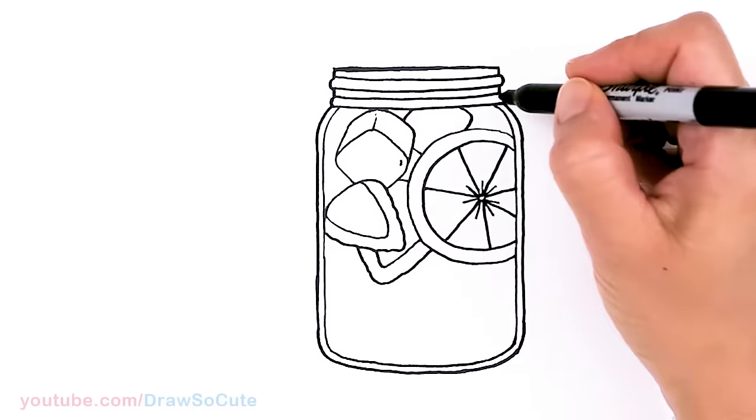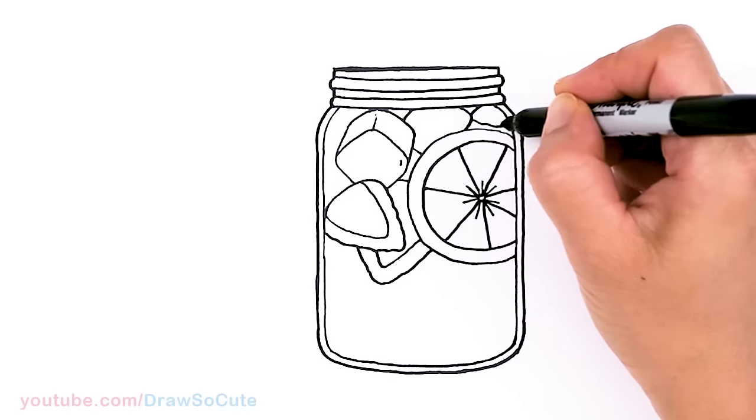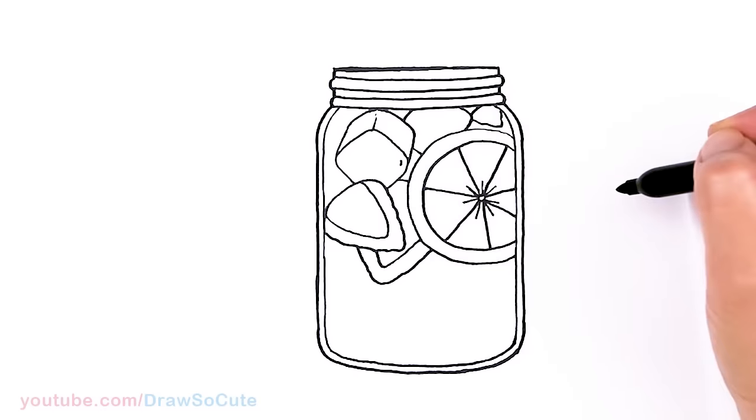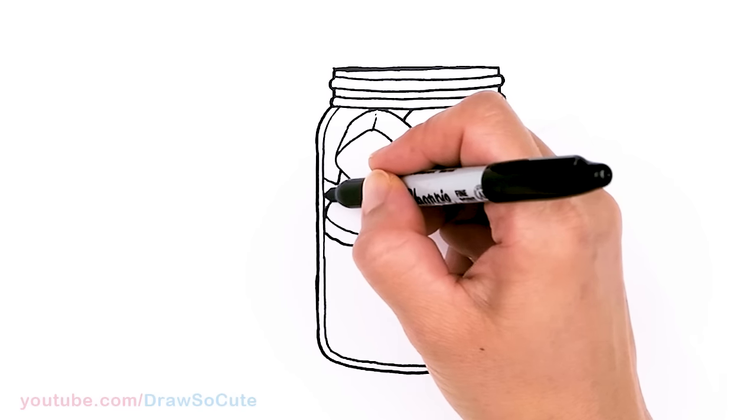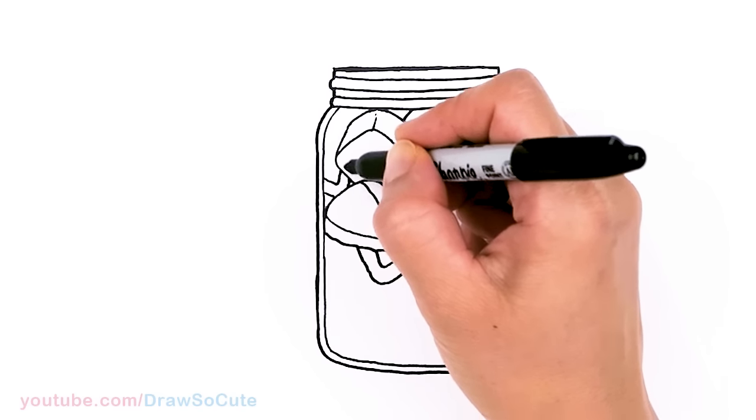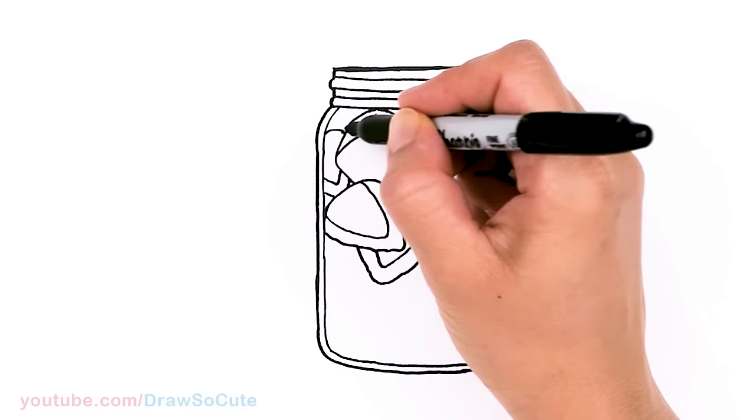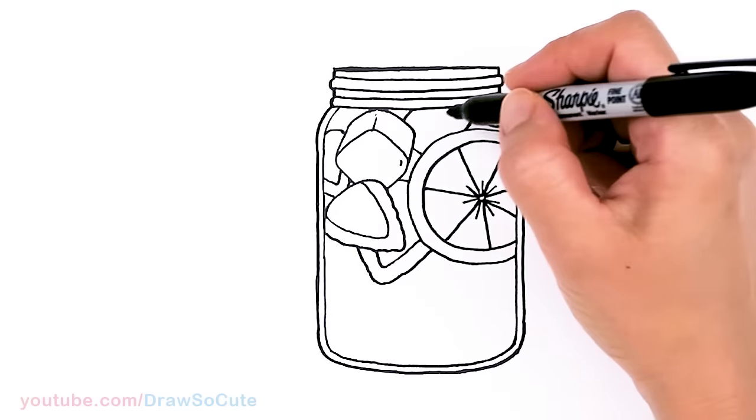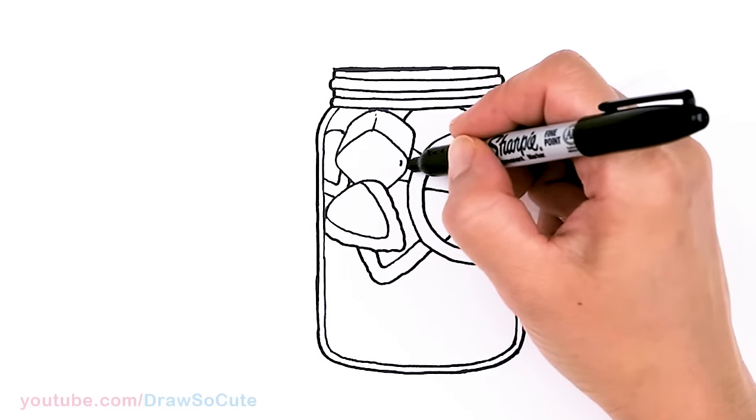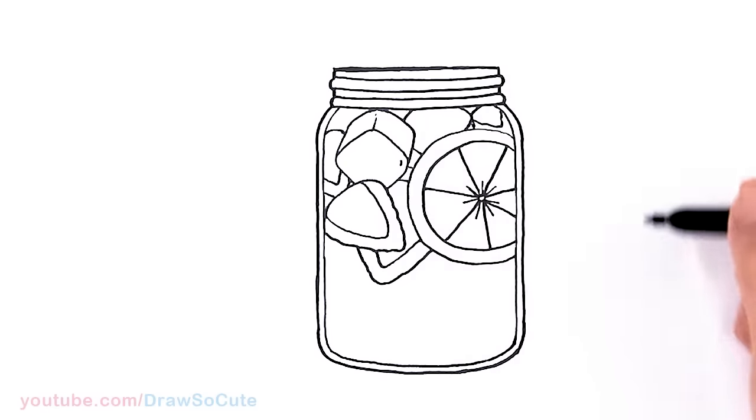So here and there, whatever space you have left, you can either add some ice or some slices of strawberry. So maybe that could be a chunk of ice, maybe another strawberry here. Maybe another one here. So there's no right or wrong way. You just want to kind of fill in this space. And when you color it, it really brings it to life and everything makes sense. So some ice here.